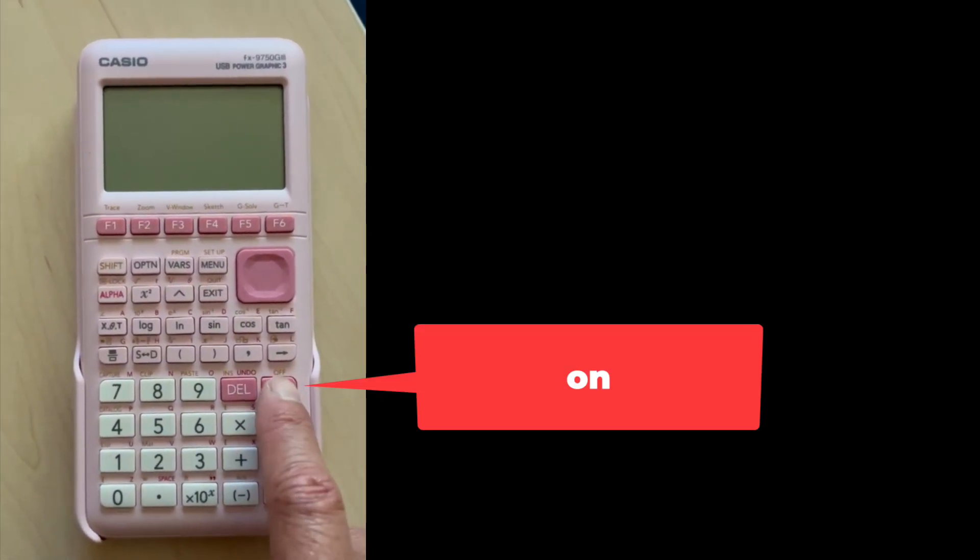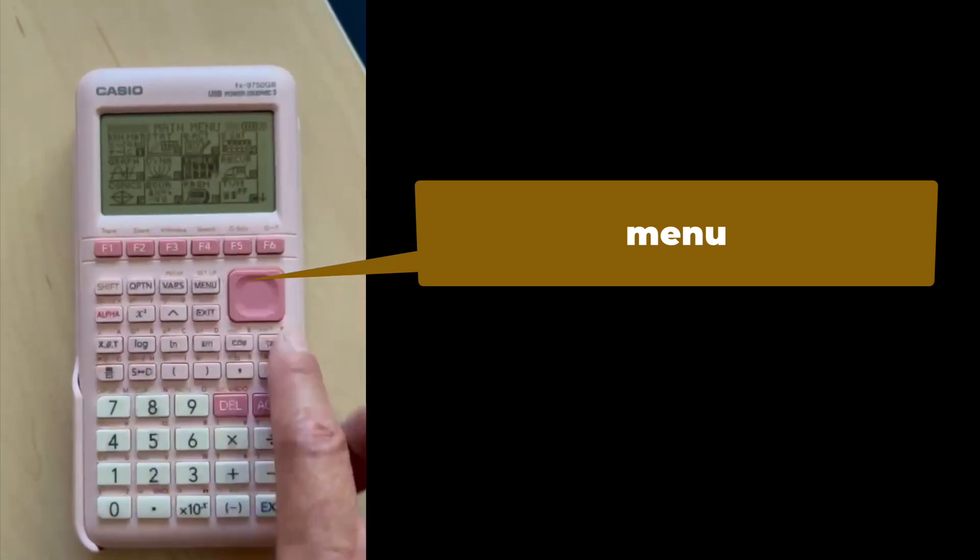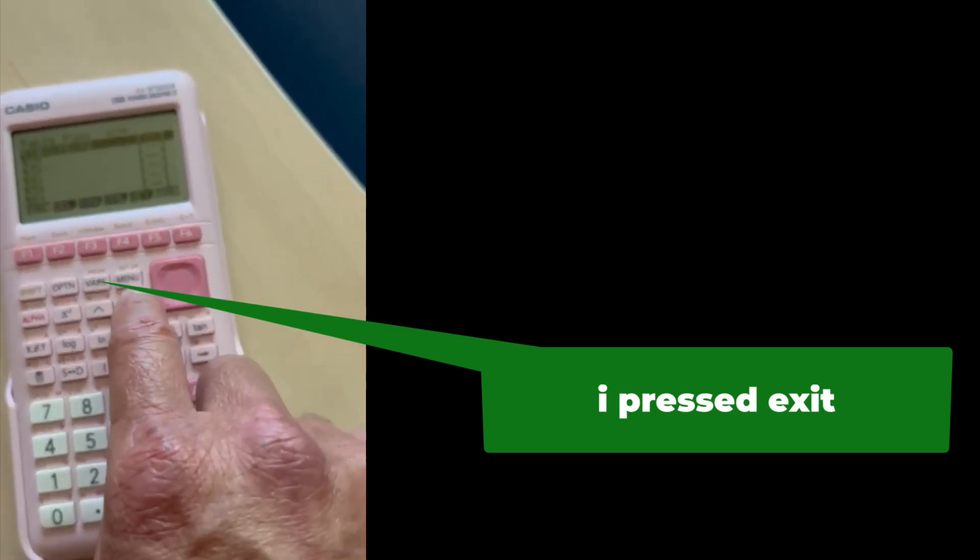This is how to use the Casio graphing calculator. Press on, and then you go to menu. You're going to have a bunch of menus. You can either use scroll, or I like to... Excellent.